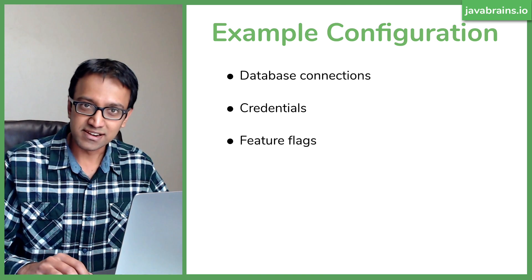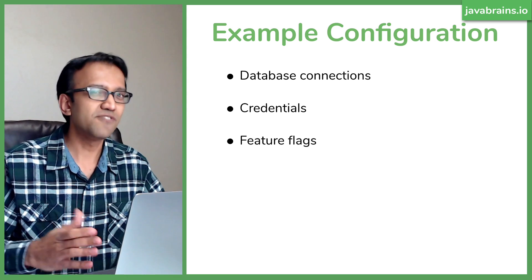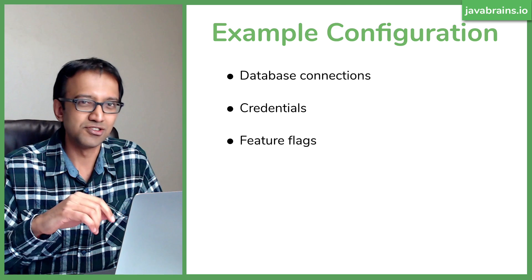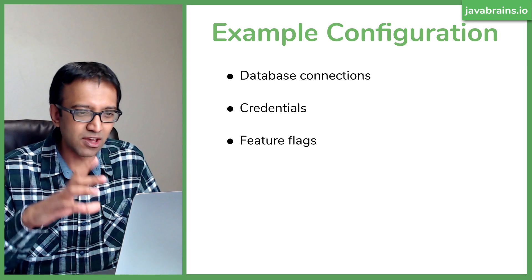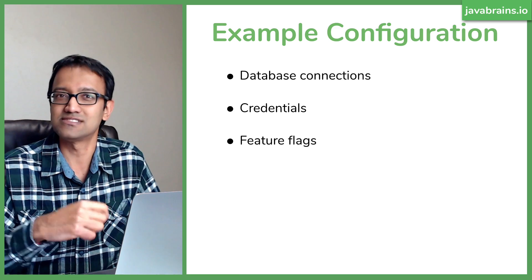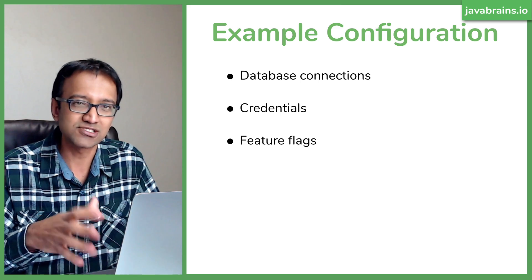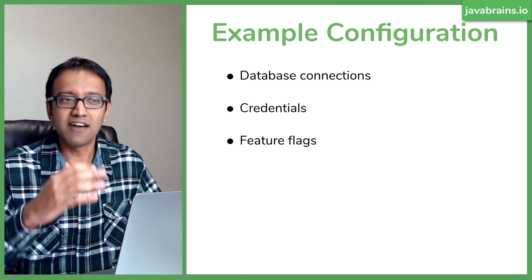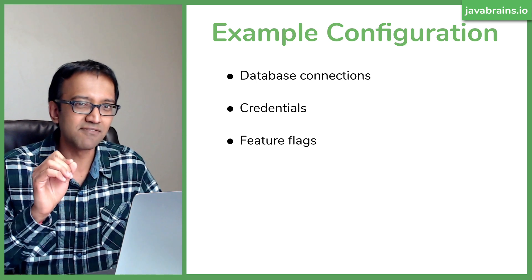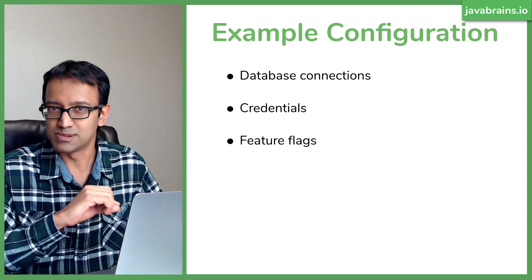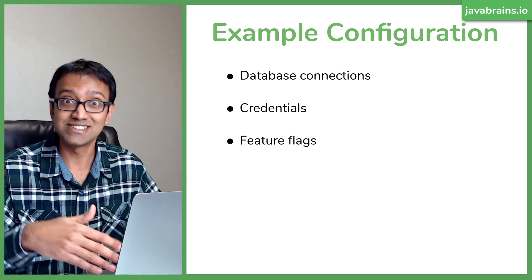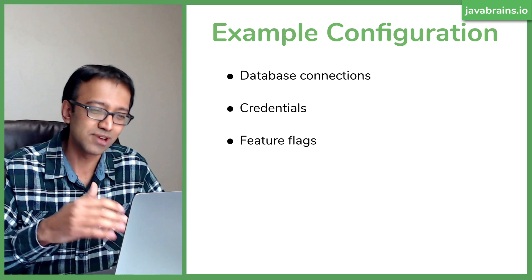Feature flags are another example of configuration. A feature flag lets you roll out a feature cautiously — for example, enabling it only from 8pm to 10pm each night to see user engagement and performance. Based on that, you can turn it on longer or for a subset of users, then gradually expand. You don't want to deploy code every time you want to change who sees a feature — you want to externalize it into configuration.